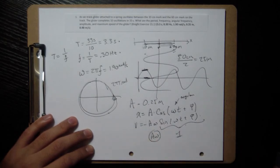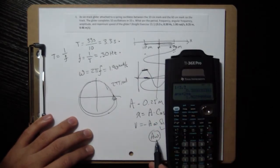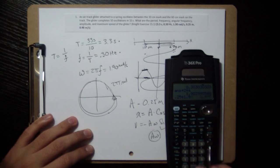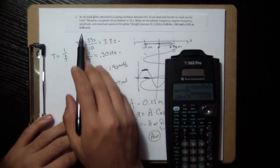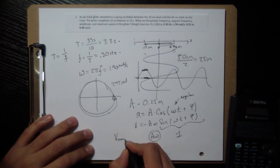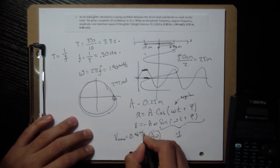So A times omega is what we want. A is 0.25, and omega is 1.9. So we multiply 0.25 times 1.9, and we get 0.475, which is what our answer is for the maximum speed.